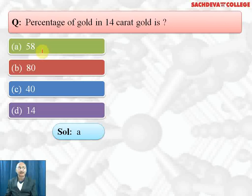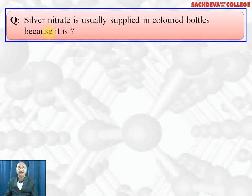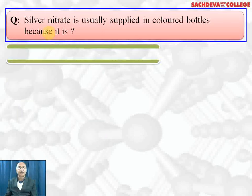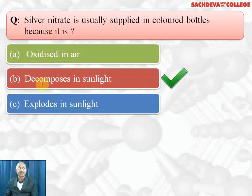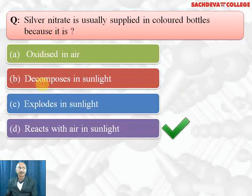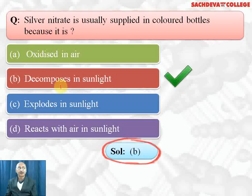Silver nitrate is usually supplied in covered bottles because it decomposes in sunlight. Correct answer is it decomposes in sunlight forming grayish color silver, so it has to be kept in dark colored bottles so as to cut off sunlight.